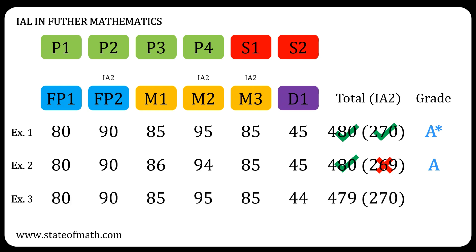In example three, the total UMS is 479 and the total of the IA2 units is 270. Although the star condition is satisfied, the A condition is not, so the grade awarded is B.